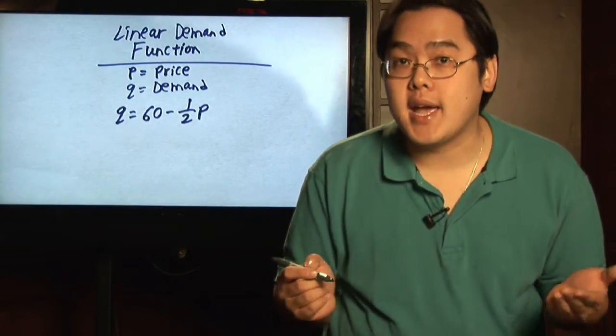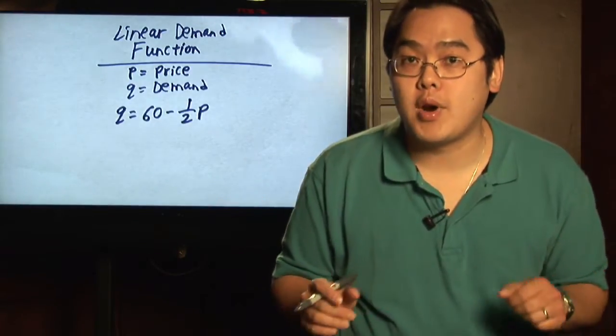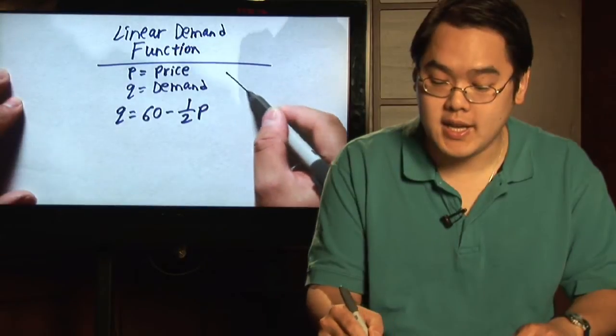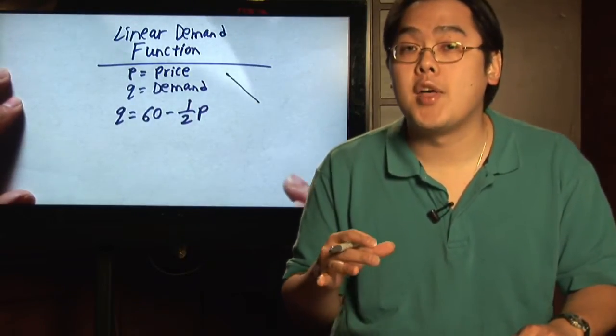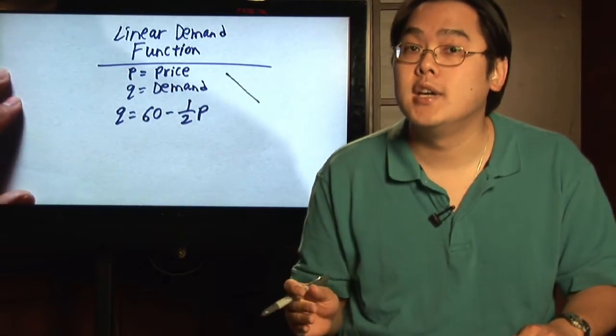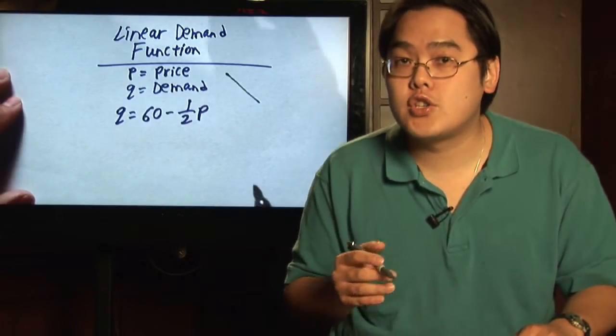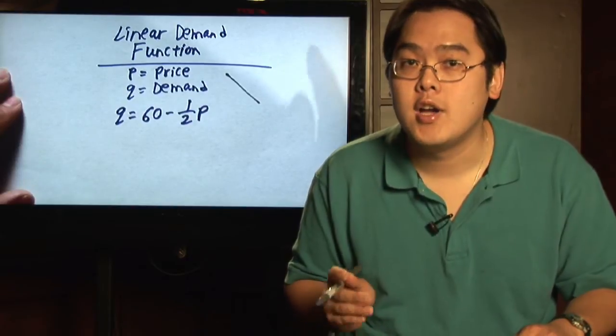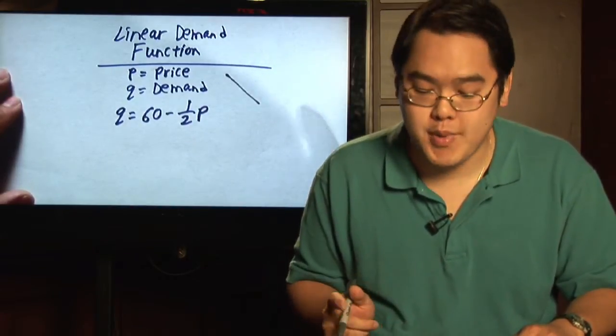Now the demand really depends on what the price happens to be. So therefore linear demand functions tend to be that of a downward line because the higher the price generally the lesser the demand. So we're going to do an example of a linear demand function and give you an idea as to how price is related to demand.